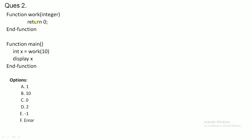The next question: there is a function named 'work' that takes an integer argument and returns 0. In main, integer x is assigned by calling work(10). Control goes into the function which returns 0, so 0 is assigned to x. Now x is displayed — wait, x was 10 before the assignment and the display shows x, so 10 will be displayed.